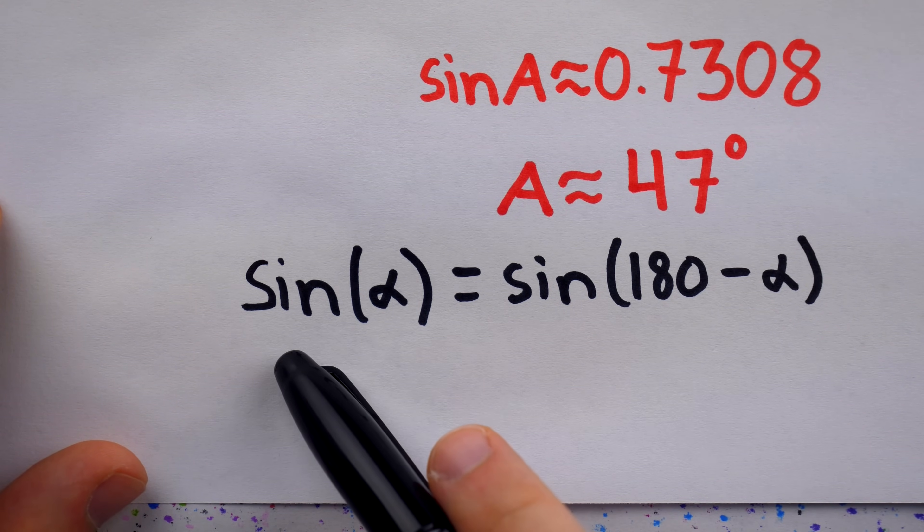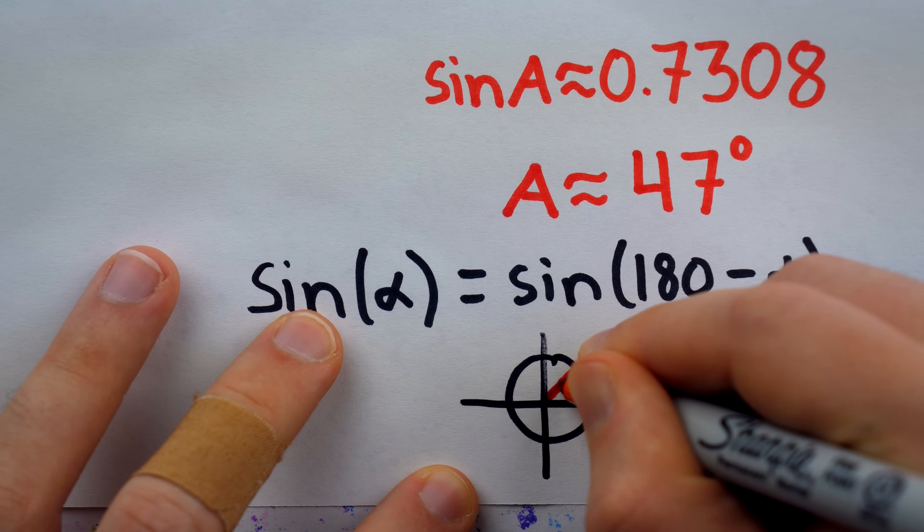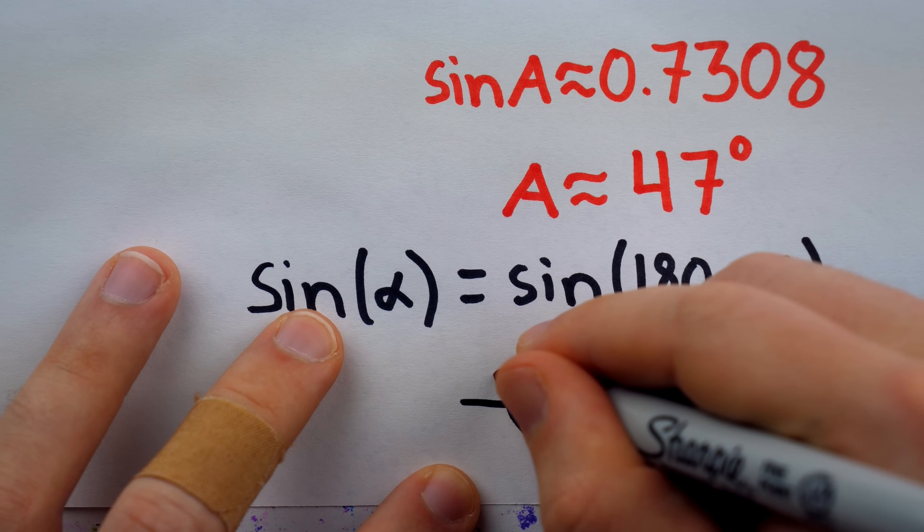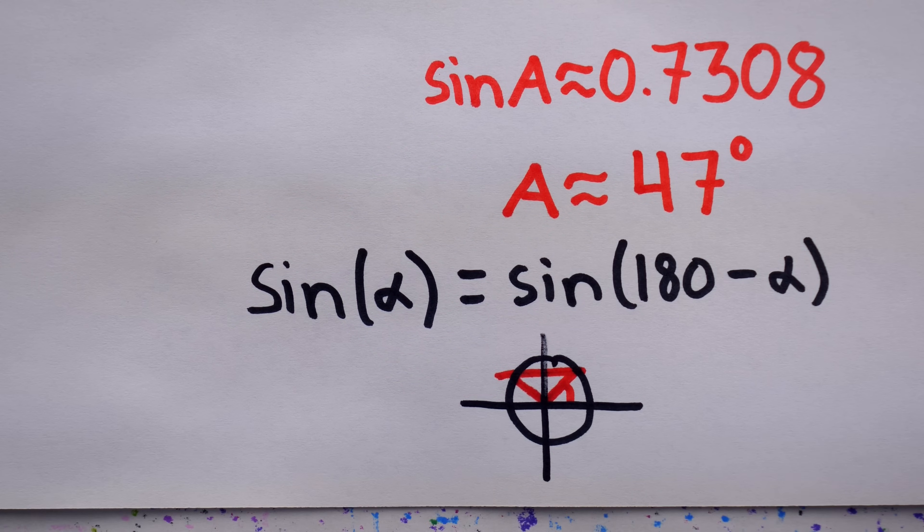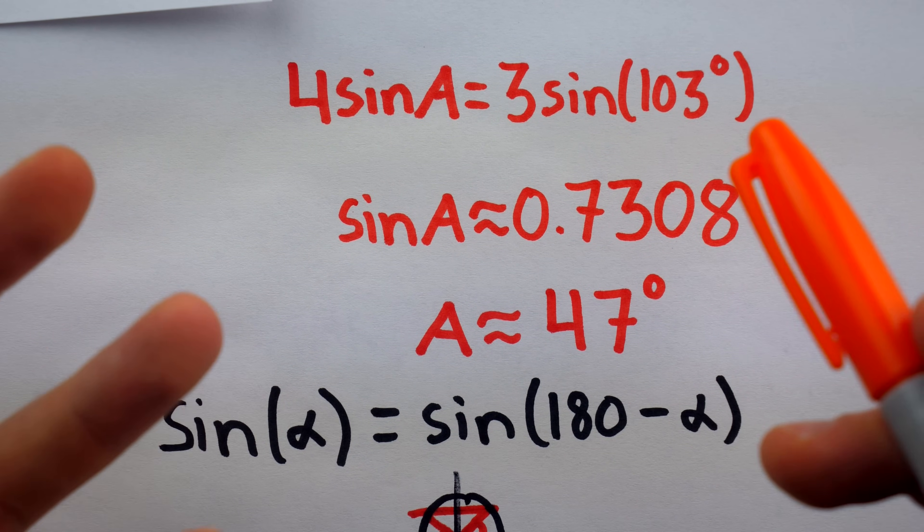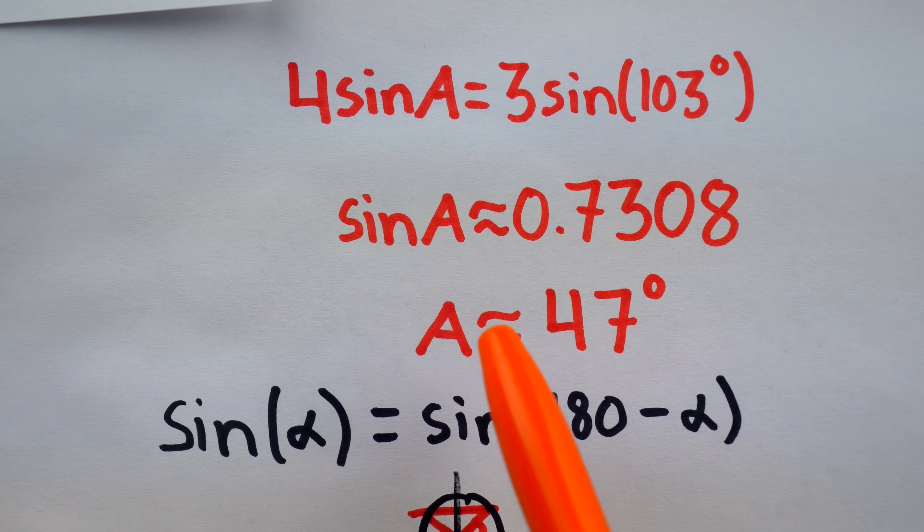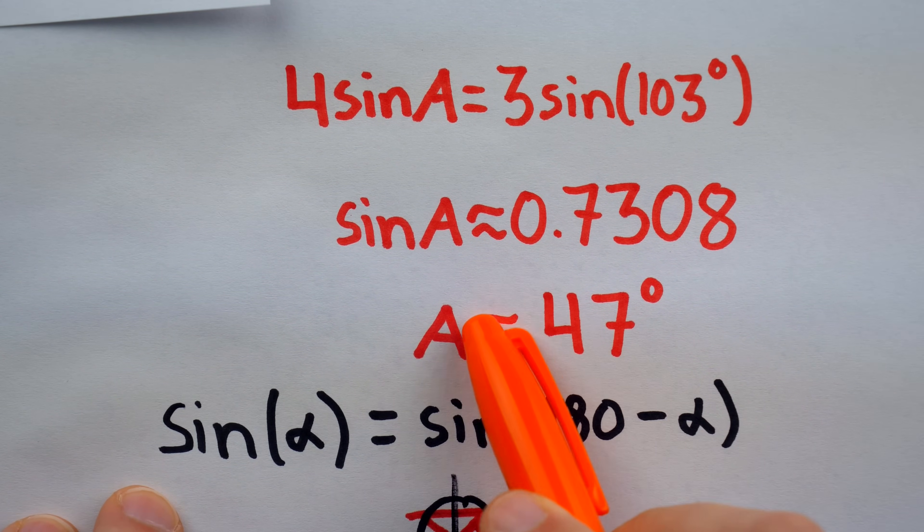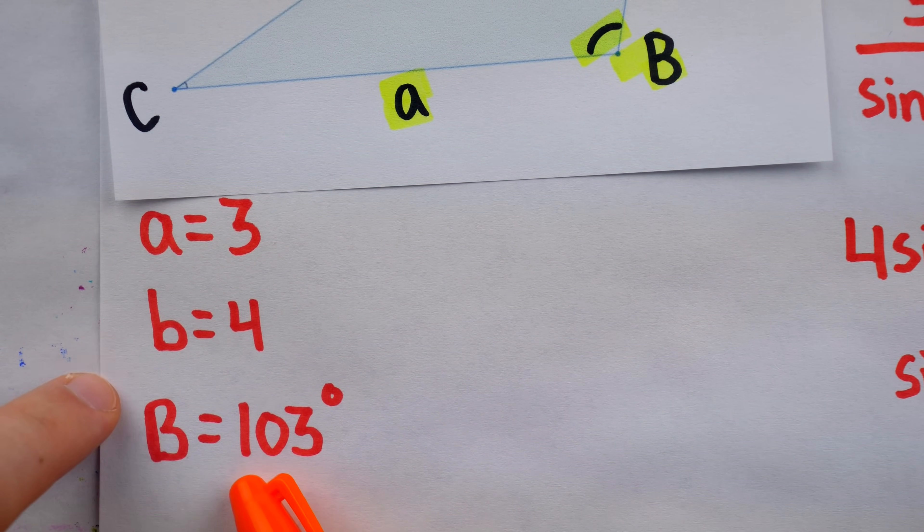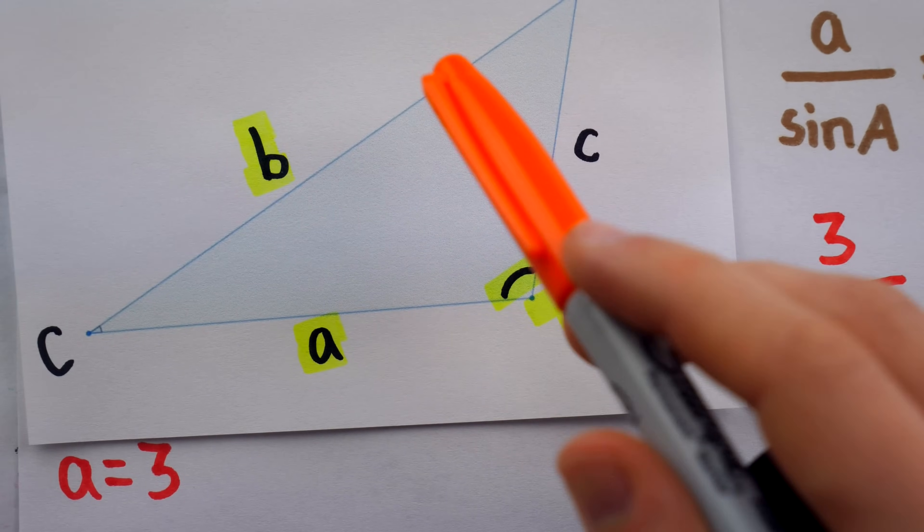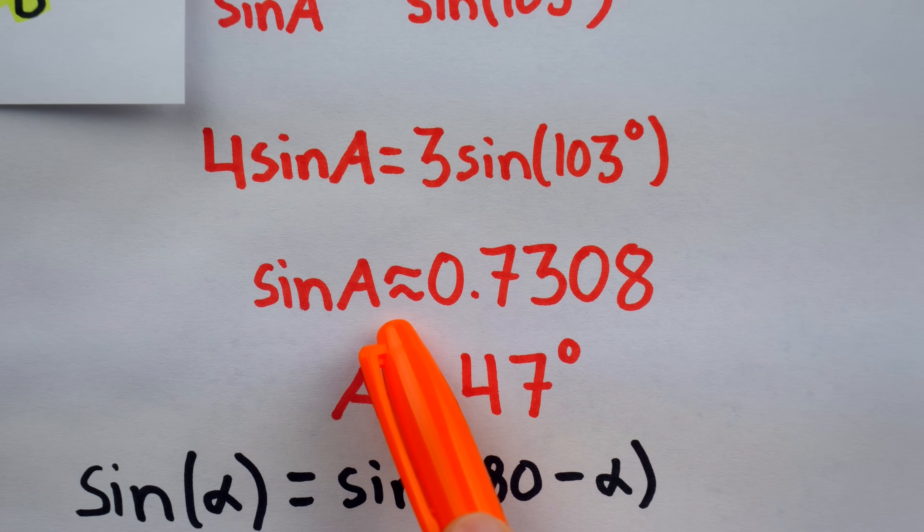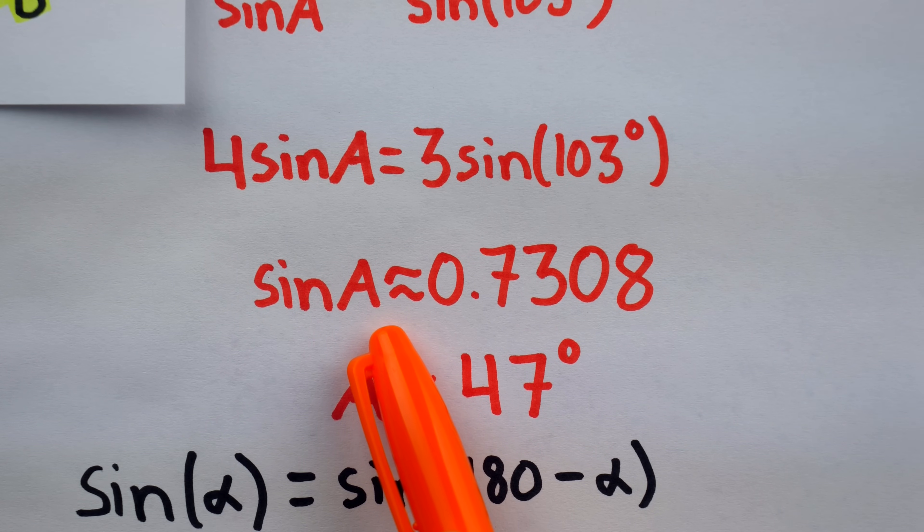This is where we will use the inverse sine function, also sometimes called the arc sine function. Take the arc sine on both sides, and we'll figure out what angle a would have to be to have 0.7308 as its sine value. Coming back to the limited edition transparent green TI-83+, we do inverse sine of the answer we got before, and we get an angle measure of 46.95. For convenience, let's just call it 47 degrees. Now, this is going pretty well because we have two angles. We know what angle a is, and we know what angle b is, and so we can now find angle c.